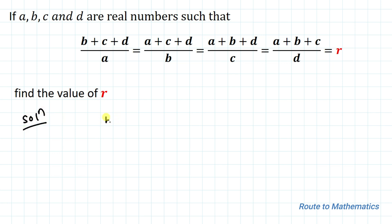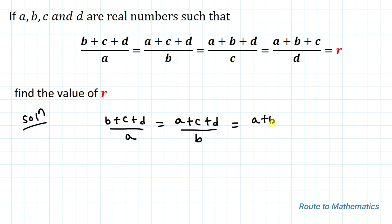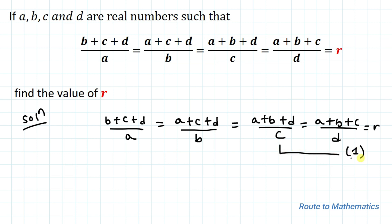We have given (b+c+d)/a = (a+c+d)/b = (a+b+d)/c = (a+b+c)/d = r. Let's take this as equation 1. In the next step, let's equate each ratio with r.